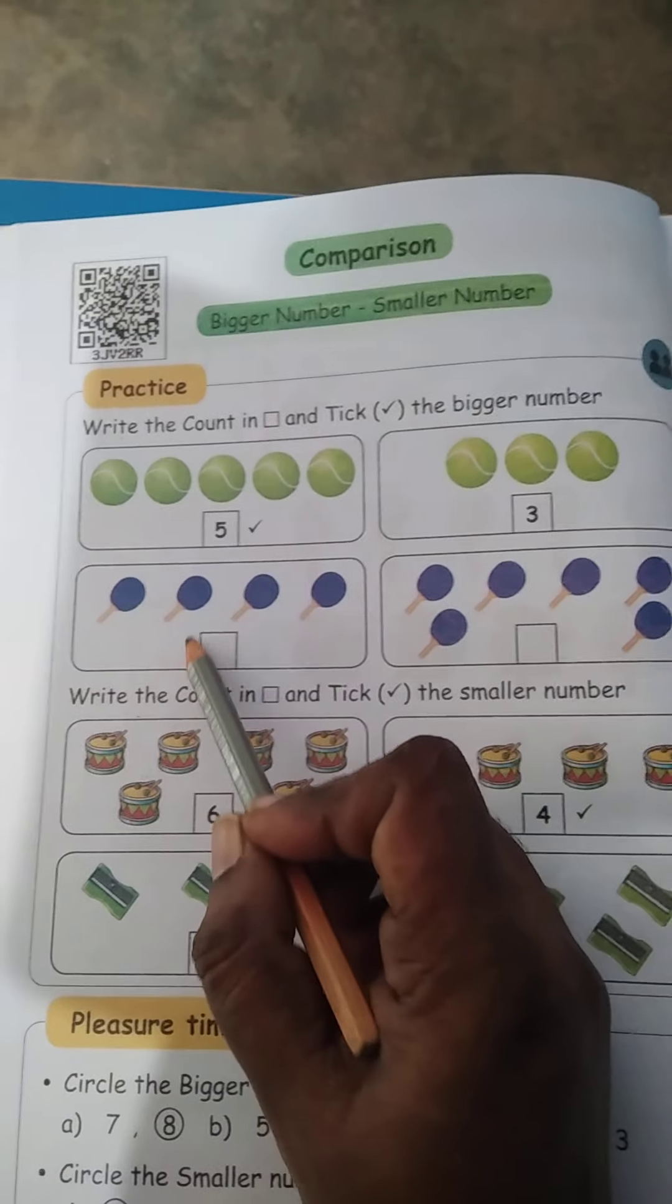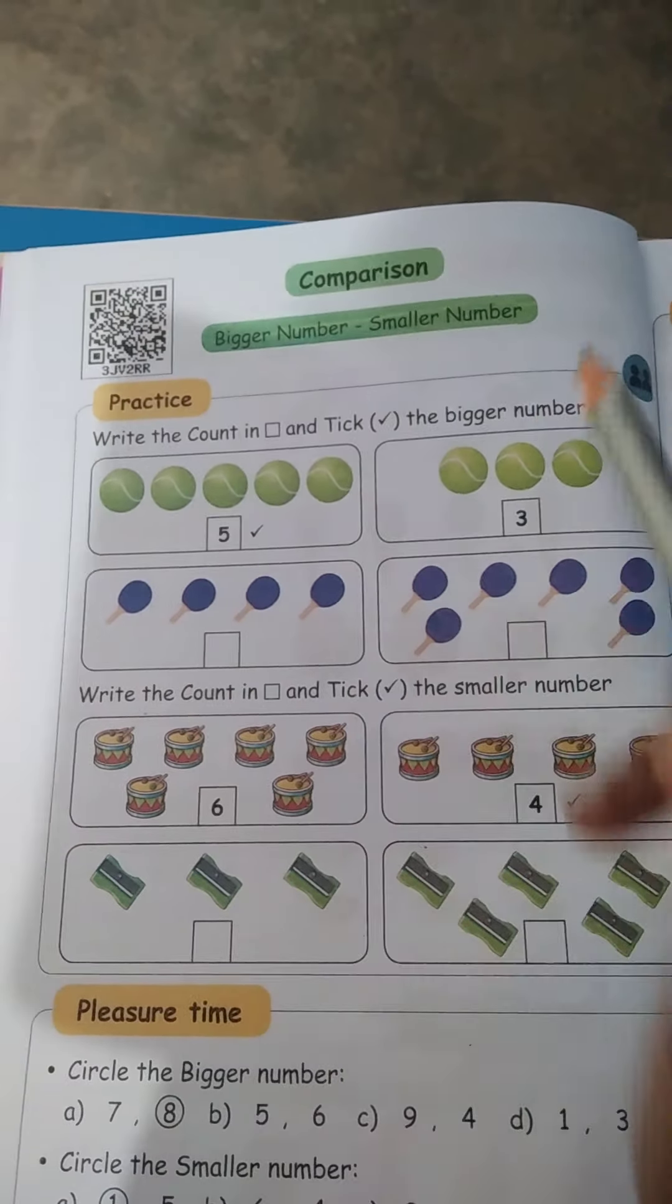Practice pula maa, and take a pencil. Write the count in a box. Counter vandhaan idhaa, the box laa fill pannu. And tick the bigger number. Bigger number, tick pannu. Vaa Next.